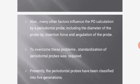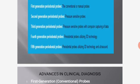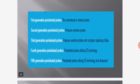Other factors affecting pocket depth calculation include the diameter of the probe tip, insertion force, and angulation of the probe. To overcome these problems, standardization of periodontal probes was required. Periodontal probes are presently classified into five generations: first generation (conventional/manual probes), second generation (pressure-sensitive probes), third generation (pressure-sensitive probes with computer data capture), and fourth generation (probes utilizing 3D technology and ultrasound).